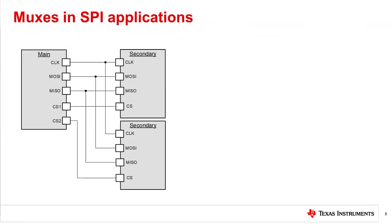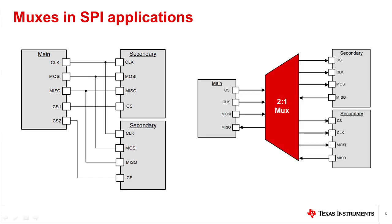SPI protocol allows for direct connection from main controllers to multiple secondary devices. However, adding too many secondaries to this direct connection will increase bus capacitance and rise-fall time of the signal. Adding a low on-capacitance MUX, such as this 4-channel 2-to-1 MUX, to switch between one or more secondary devices will grant more flexibility in systems with only one chip select line, while decreasing bus capacitance.